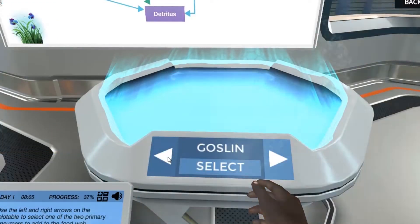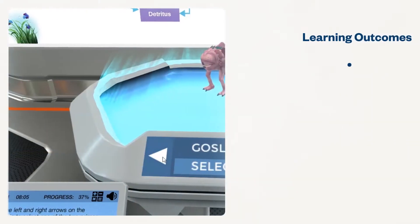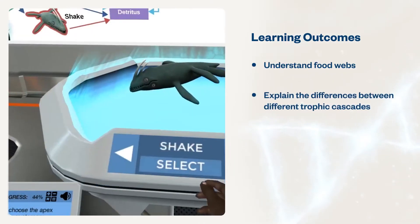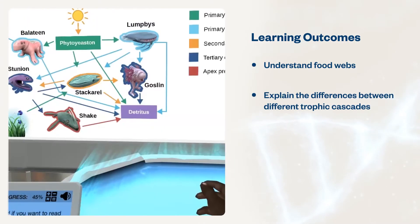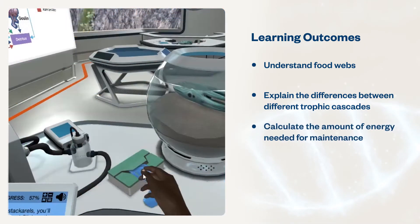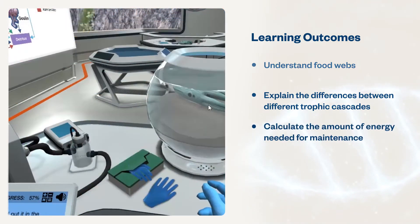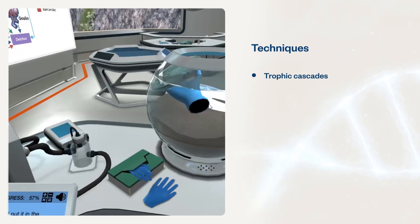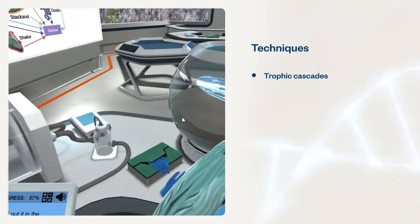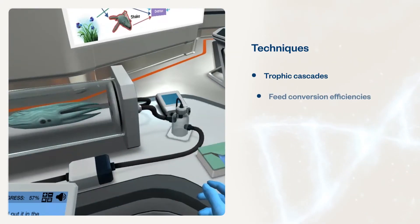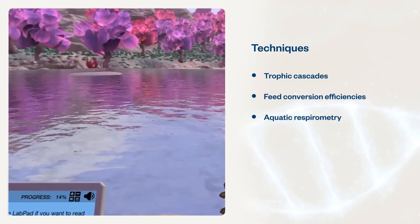These simulations will help students understand food webs, explain the differences between different trophic cascades, and calculate the amount of energy needed for maintenance. Students will use techniques such as top-down and bottom-up trophic cascades, feed conversion efficiencies, and aquatic respirometry.